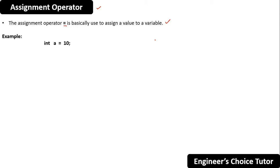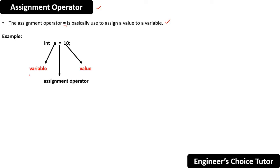For example, I have this: int a is equal to 10. So what is this 'a', what is this '10', and what is this equal to sign? This 'a' is a variable. This '10' is a value. And this equal to is the assignment operator.